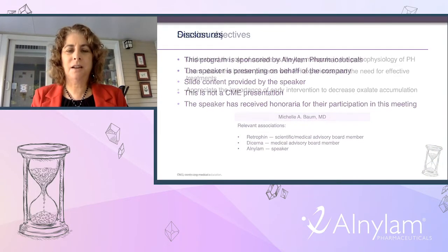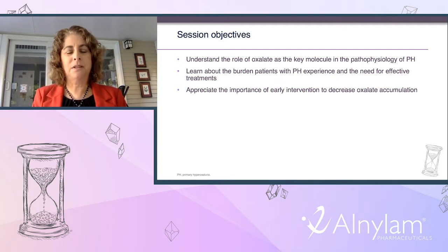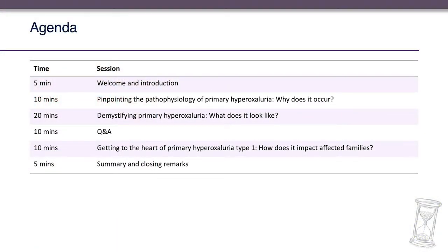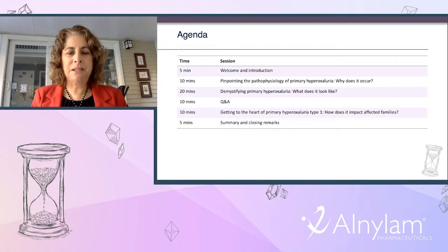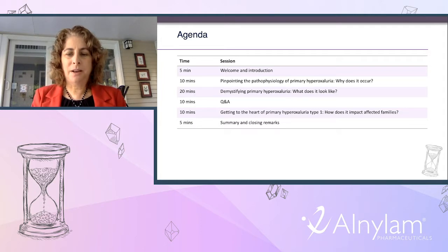Our objectives today are to understand the role of oxalate as a key molecule in the pathophysiology of primary hyperoxaluria, to learn about the burden patients with primary hyperoxaluria experience and the need for effective treatments, and to discuss the importance of intervention to decrease oxalate accumulation. We will start with the physiology of primary hyperoxaluria, followed by a talk on demystifying it, a pre-recorded Q&A session, and patient and family videos.